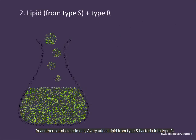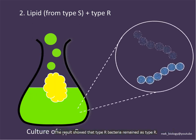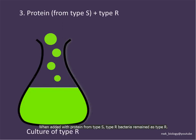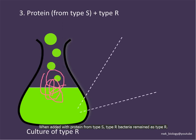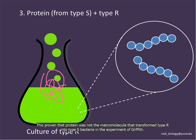In another set of experiments, Avery added lipid from type S bacteria, and the result showed that type R bacteria remained as type R. When protein from type S bacteria was added, type R bacteria also remained as type R. This proved that protein is not the macromolecule that transforms type R into type S bacteria.